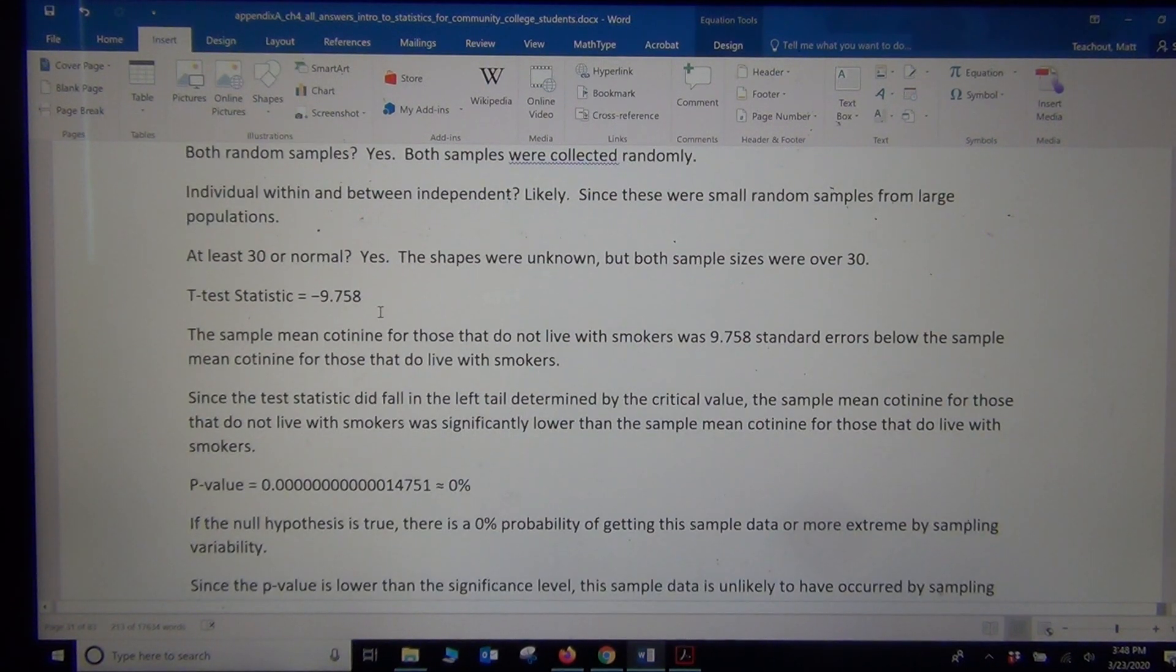Our test statistic was negative 9.758. That's a t-test statistic. That's a very significant t-test statistic. T's get significant around two standard errors. This is nine standard errors. That's a lot for a t. So the sample mean cotinine for those that do not live with smokers was 9.758 standard errors below the sample mean cotinine for those that do live with smokers. That's very significant.